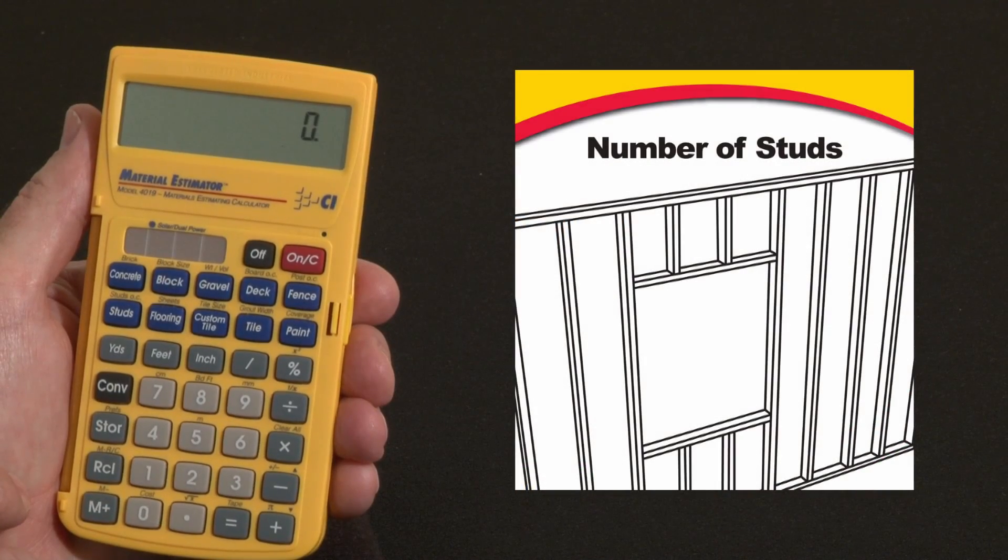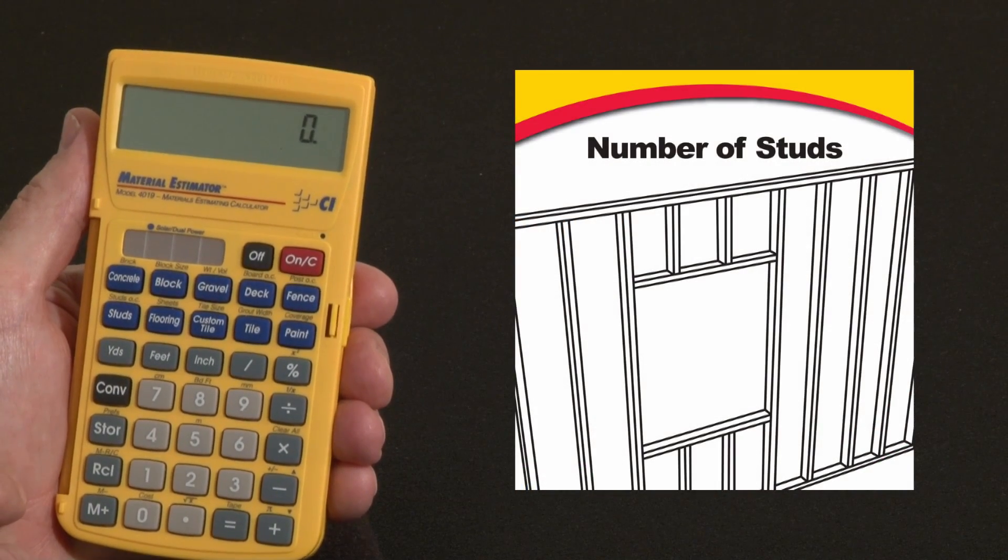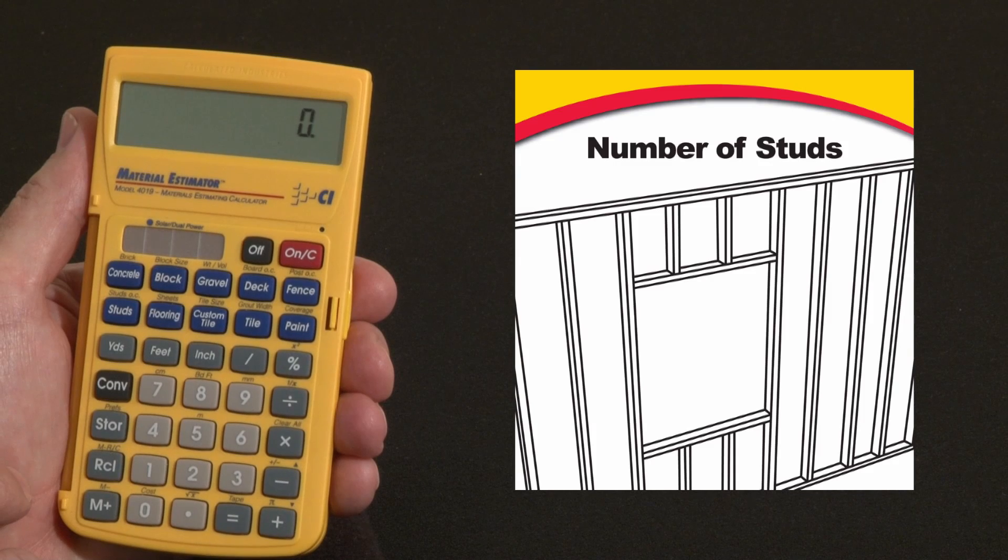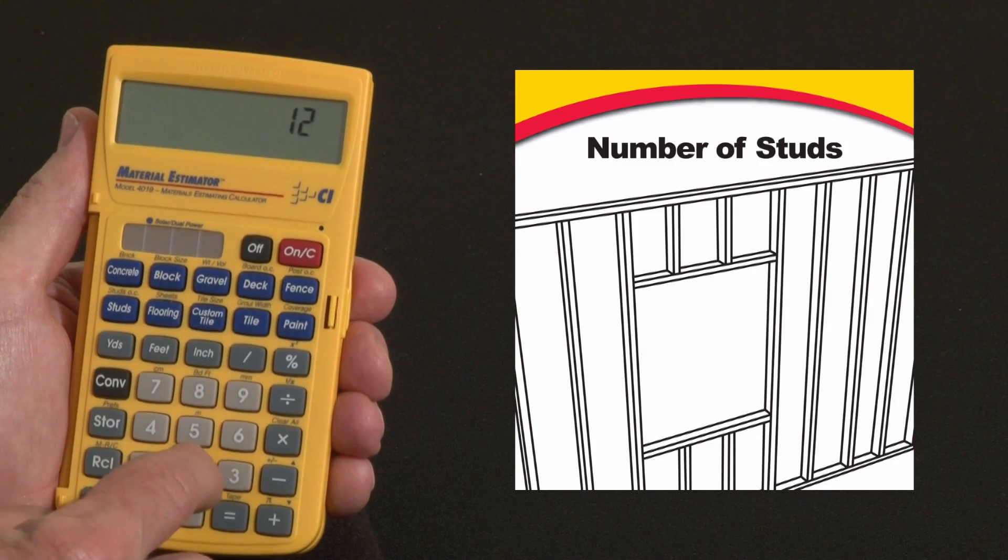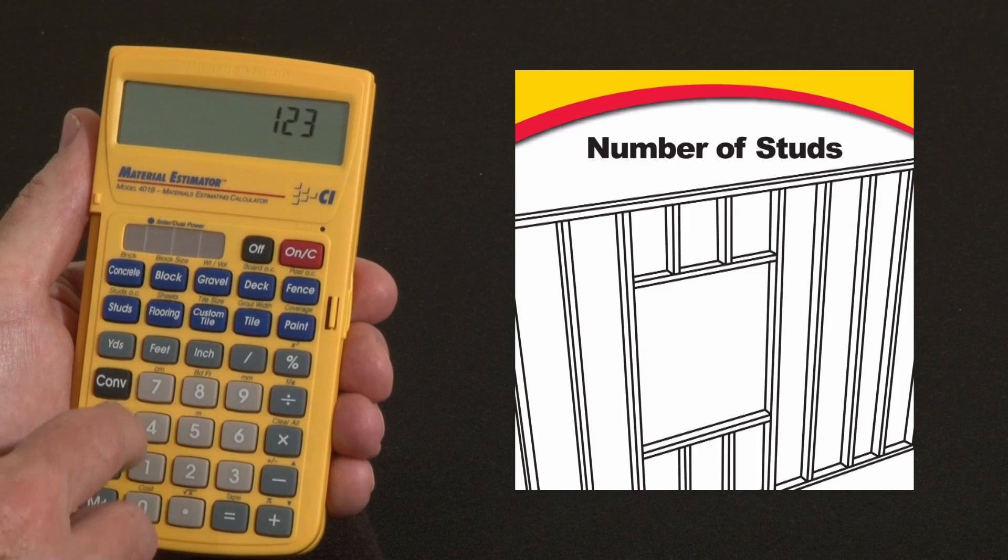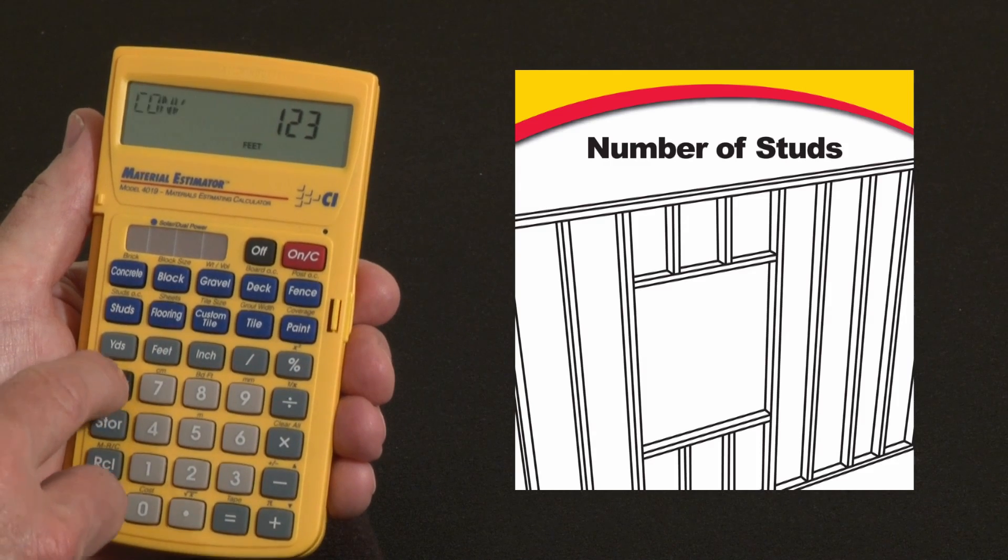Now let me show you how to calculate the number of studs needed using a material estimator's studs function. You simply enter the linear feet of wall section you're trying to solve studs for, let's say 123 feet, and hit convert to studs.